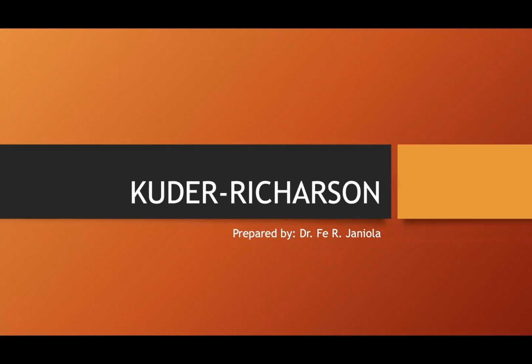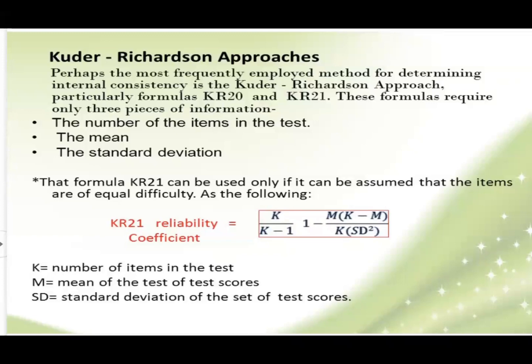About reliability test, specifically under the Kuder Richardson. So we have Kuder Richardson approaches is the most frequently employed methods for determining internal consistency. So this particular formula required only three pieces of information. So only one shot exam here. So the number of items in the test, the mean, and the standard deviation.